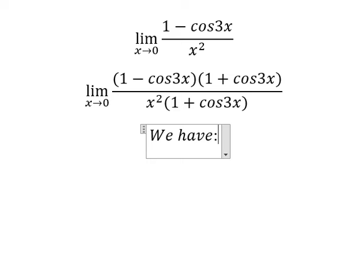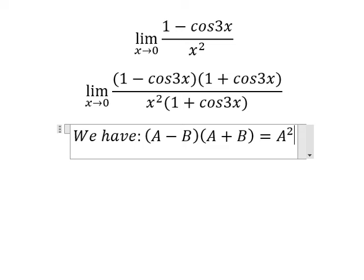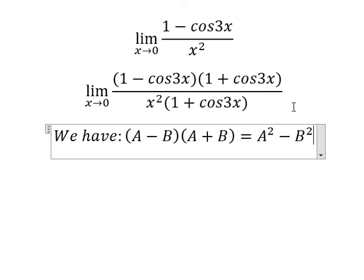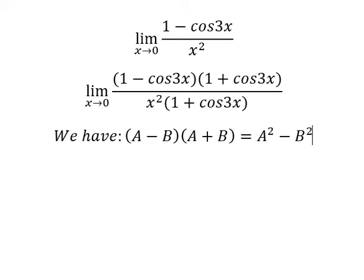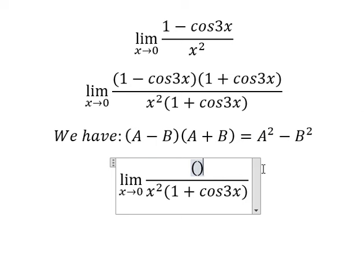We have the formula: (A - B)(A + B) = A² - B². So we need to transform into this form, and we have 1 - cos²3x.